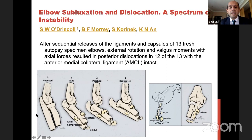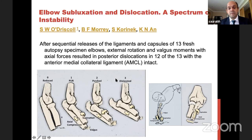O'Driscoll did a cadaveric study applying external rotation, supination, valgus force, and axial compression. He found a spectrum: for the elbow to reach the dislocated stage it goes from normal through various stages. First stage is PLRI — the LUCL avulses off just below the lateral epicondyle in 95% of cases; only 5% come off at the insertion on the supinator crest of ulna. Second stage: forces continue and the elbow becomes perched, with anterior capsule tearing. Finally, the elbow dislocates and MCL may or may not go even at that stage.